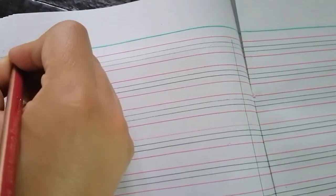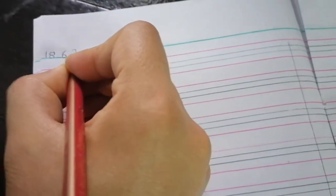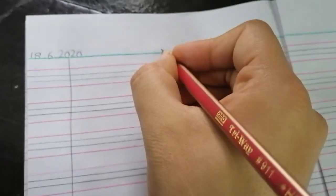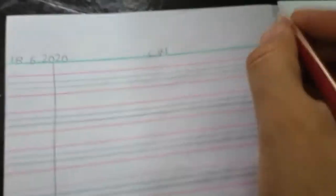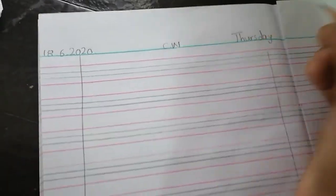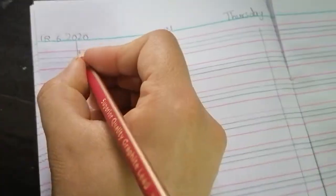Today we are going to do dictation words. Write down the date on the top. Today is 18, month is June, number of June is 6, and 2020. Then write down classwork, C.W., classwork. And what day is today? Today is Thursday, T-H-U-R-S-D-A-Y, Thursday.